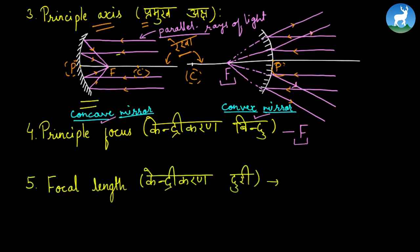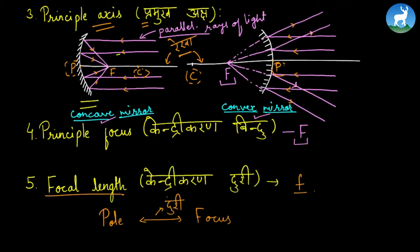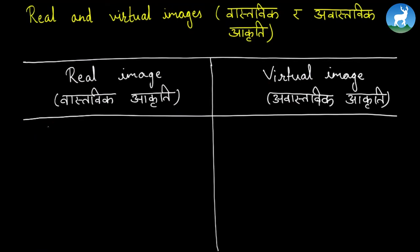The focal length, which is the distance from the pole of the mirror to the principal focus, is denoted by small f. The distance from the pole to the principal focus is called the focal length, represented by small f.